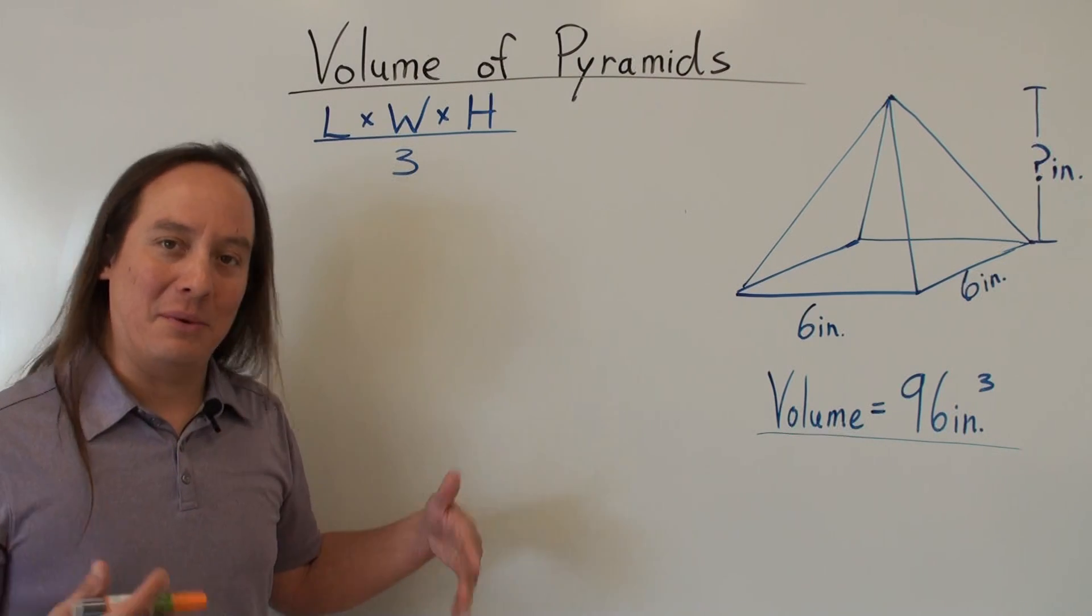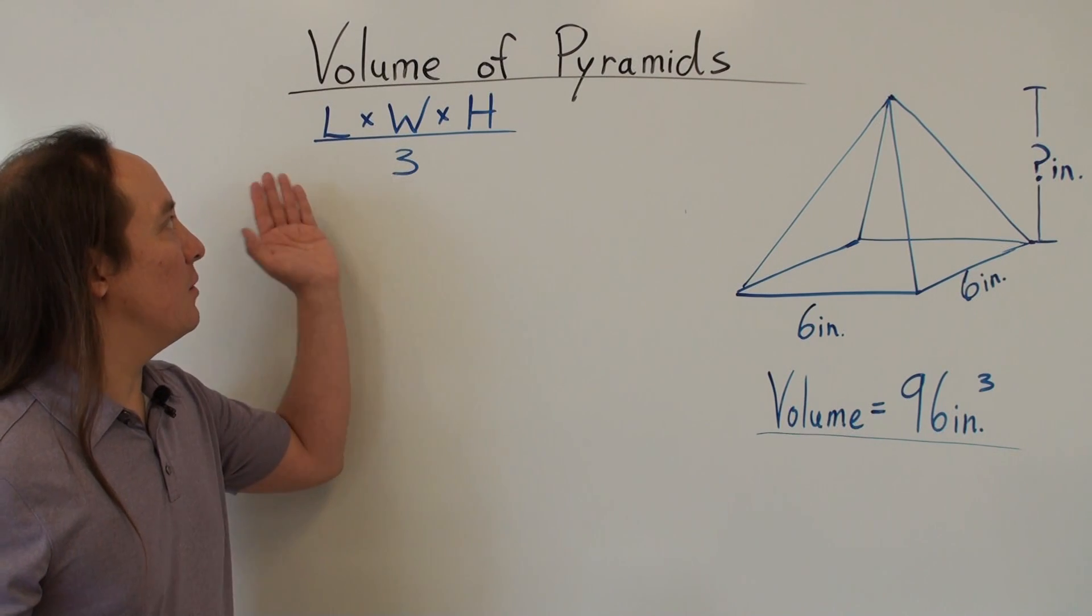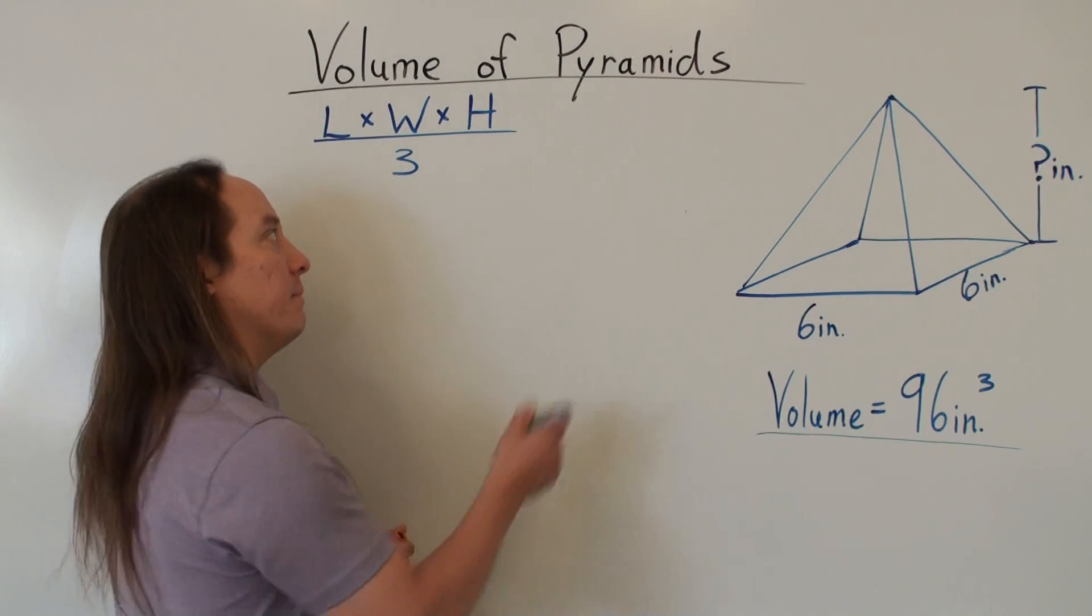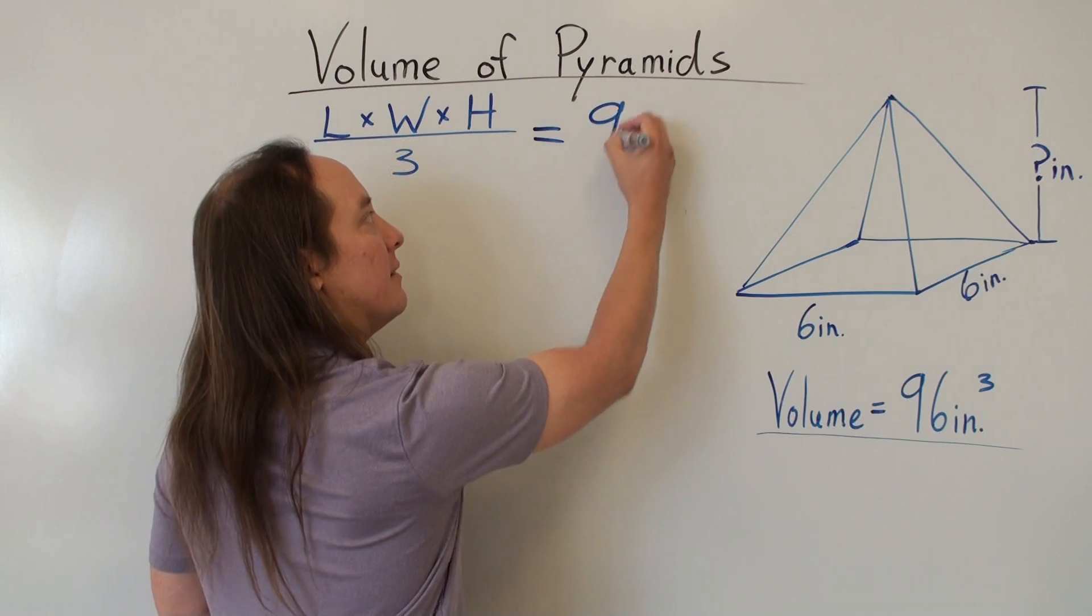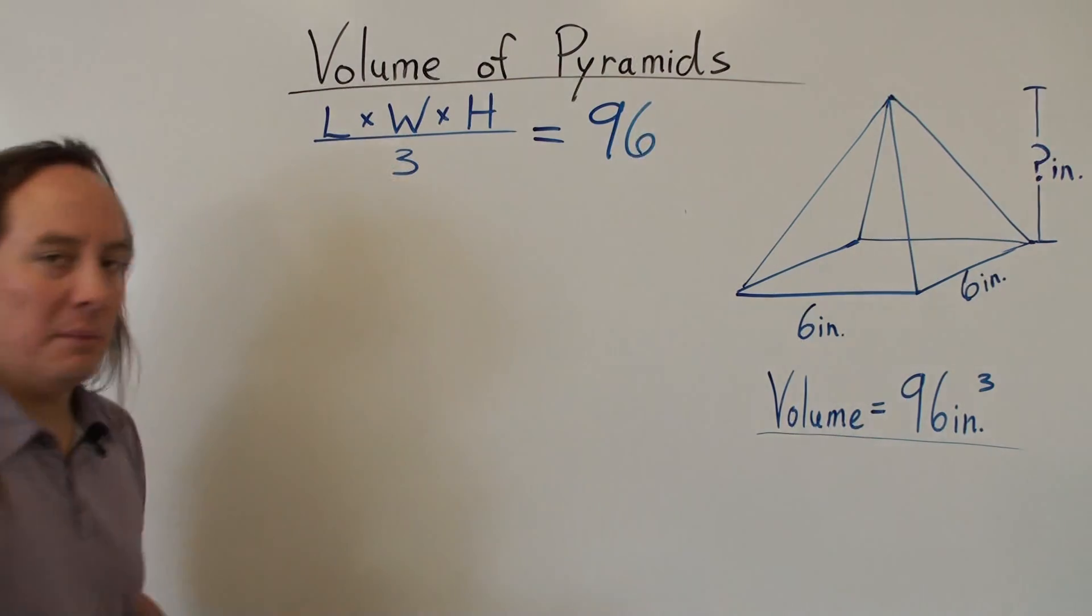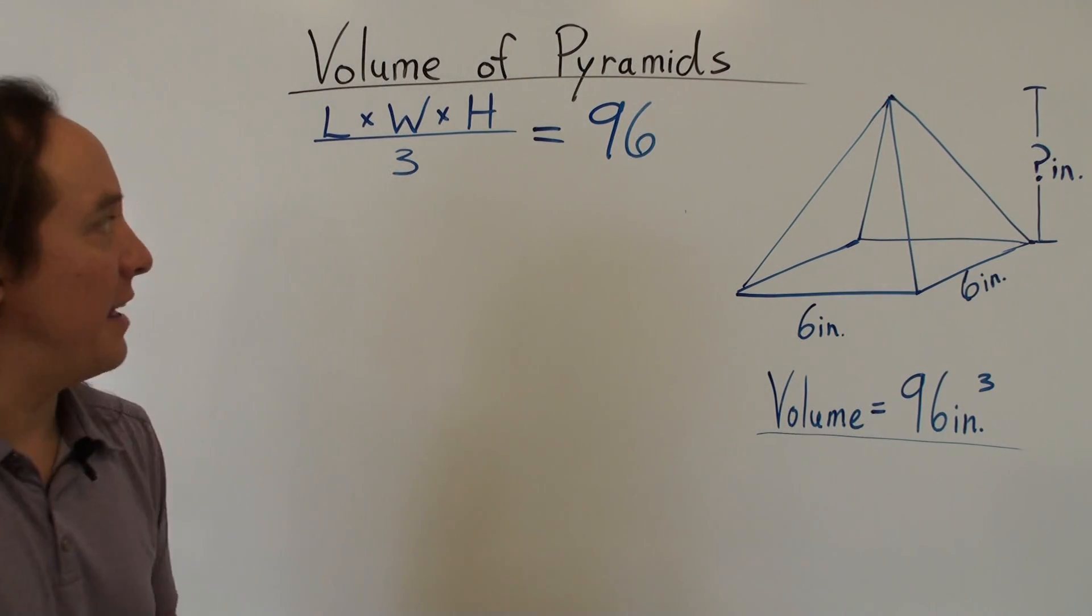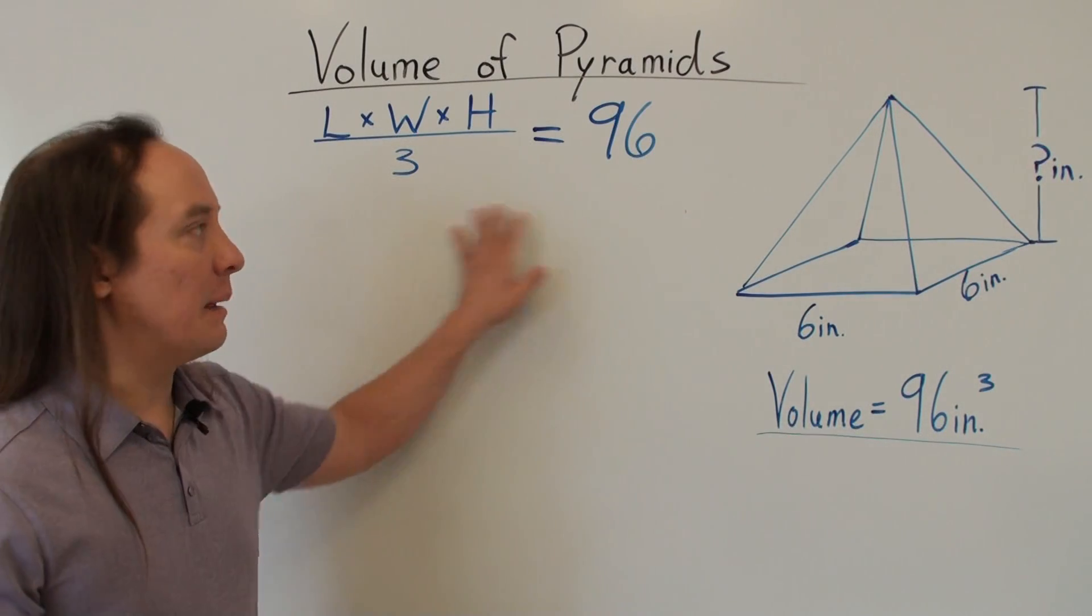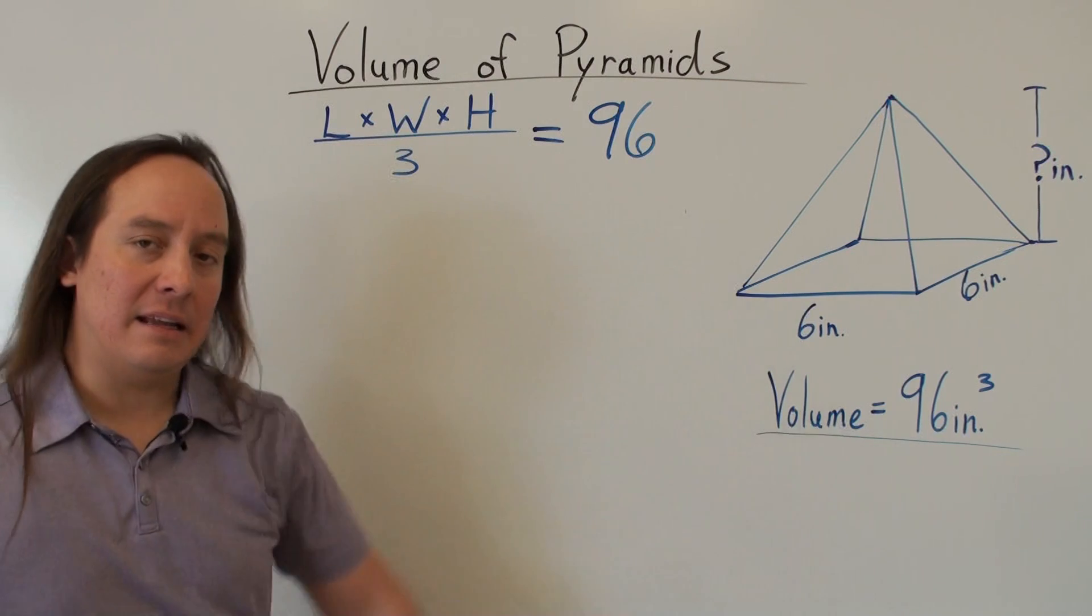Well, they use the formula just the way we would. Just like we did in the last problem, we have to use the formula. So it's length times width times height divided by three, and that gave them the volume of 96. I'm not going to put the inches cubed this time because I'm trying to set up the equation. Like I said, we're going to be using algebra, so I'm just setting up the equation. So they did all of this, and they got 96.